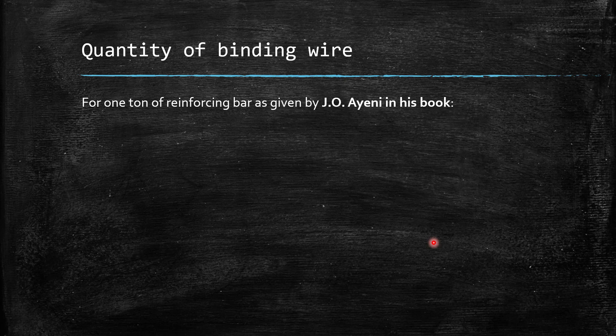For one ton of reinforcing bar, as given by J.O. Ione in his book, for 8 mm bar, we need 13.5 kg binding wire.